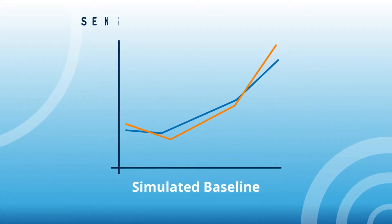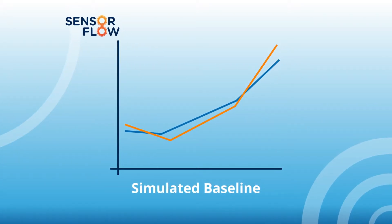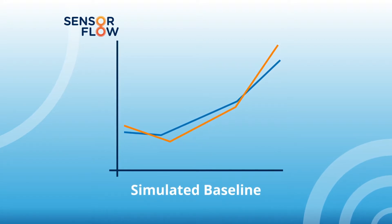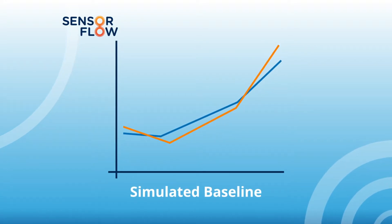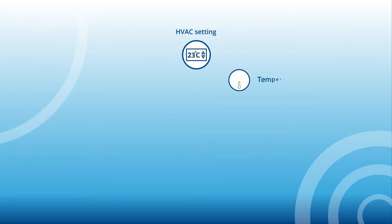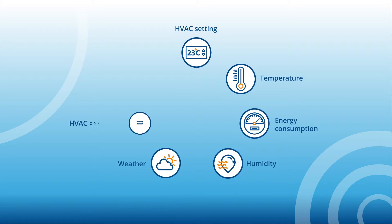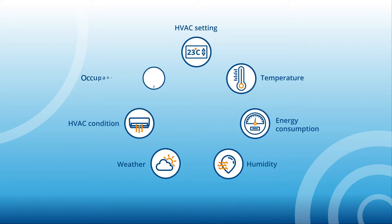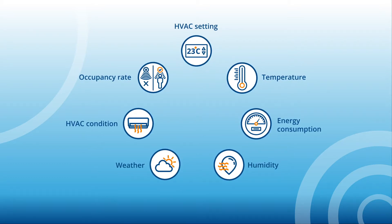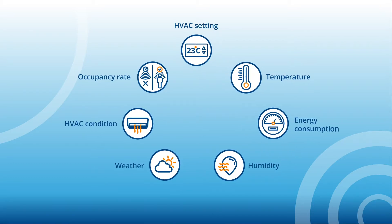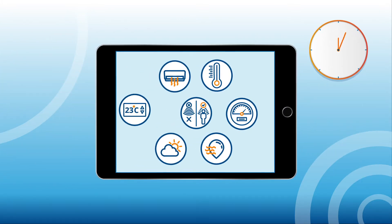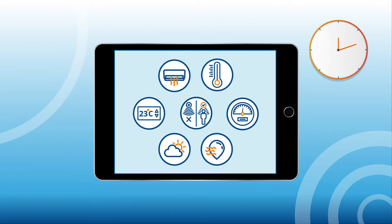SensorFlow uses the simulated baseline approach, which works by creating a model that identifies the relationship between the different factors and the guest room's HVAC system energy consumption. Our sensors track all the contributing factors — such as AC setpoint, room temperature, actual energy consumption, humidity levels, and weather conditions — every 15 minutes, all day, every day.